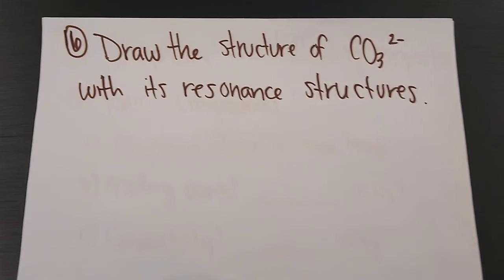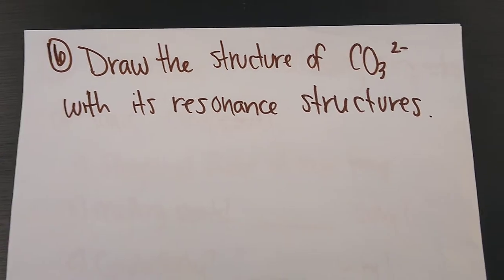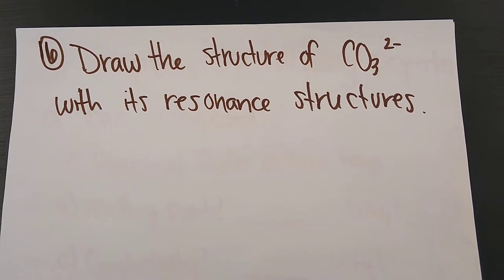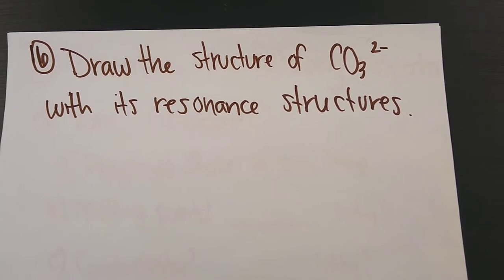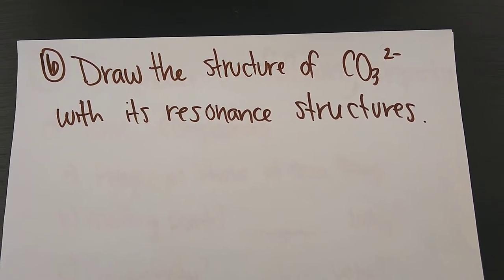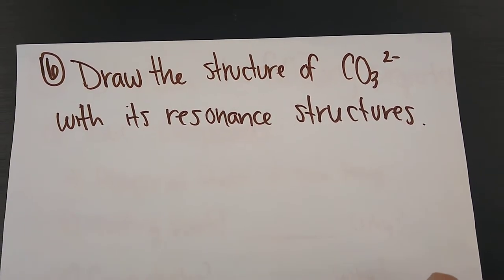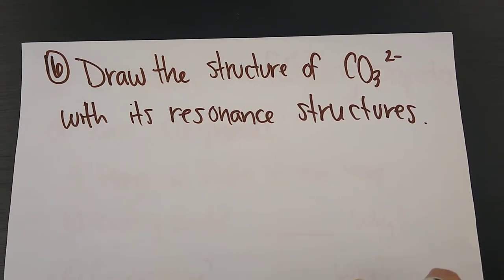Six, draw the structure of CO32- with its resonance structures. So draw the Lewis structure of CO32- and I'm telling you it has resonance, so you're going to have to draw more than one. Make sure that you know that resonance means it has more than one on the test.